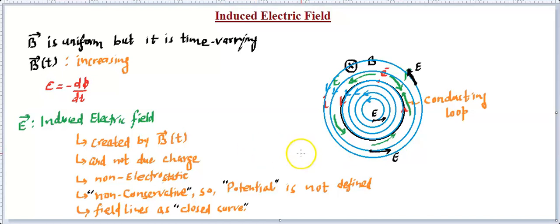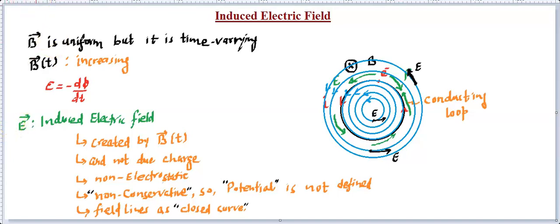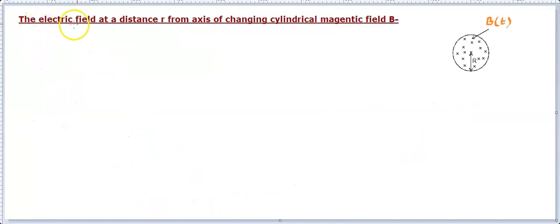That is about induced electric field — its generation. It is hidden in Faraday's law, and we can find its direction in any time-varying magnetic field by looking at the direction of the induced current. Now the purpose is to find out its magnitude as well. So let's find the induced electric field at a distance r from the axis of a cylindrical region, where a uniform time-varying magnetic field exists inside the cylinder of radius R.